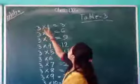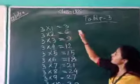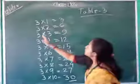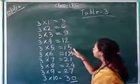3 ones are 3, 3 twos are 6, 3 threes are 9, 3 fours are 12, 3 fives are 15.